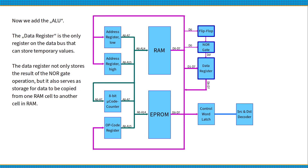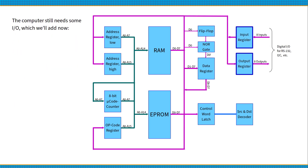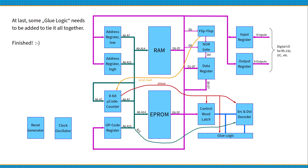Now we add the arithmetic logic unit. The data register is the only register on the data bus that can store temporary values. It not only stores the result of the NOR gate operation, but also serves as storage for data being copied from one RAM cell to another. The computer still needs some I/O, which we add now. Finally, some glue logic needs to be added to tie it all together. Finished!